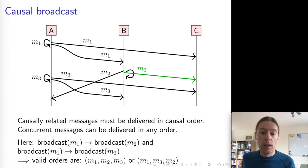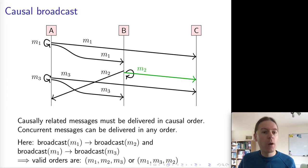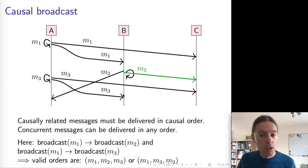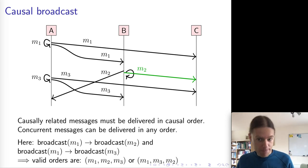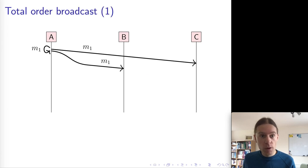Notice that A delivers M1, then M3, then M2, whereas B delivers M1, then M2, then M3. Both of these orders are valid causal orders, but they are not the same. In some cases, we actually want to require that all of the nodes deliver messages in the same order. If that is what we want, we need to move to what is called total order broadcast.